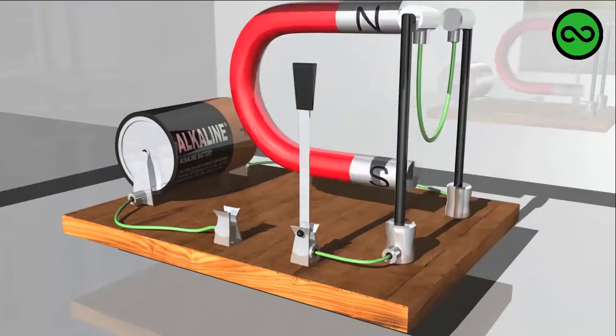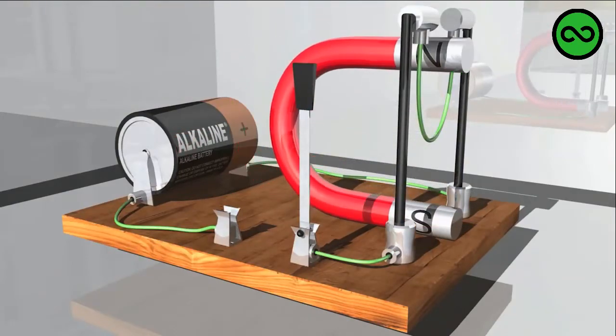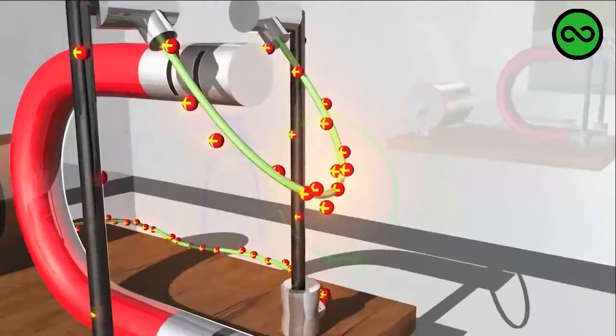Flipping the horseshoe magnet around to reverse the magnetic field around the pendulum will also cause the wire to swing in the opposite direction.